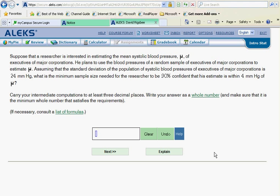He plans to use the blood pressures of a random sample of executives of major corporations to make his estimate. Assuming that the standard deviation of the population of systolic blood pressures of executives of major corporations is 24 millimeters of mercury, what is the minimum sample size needed for the researcher to be 90% confident that his estimate is within 4 millimeters of mercury for mu?